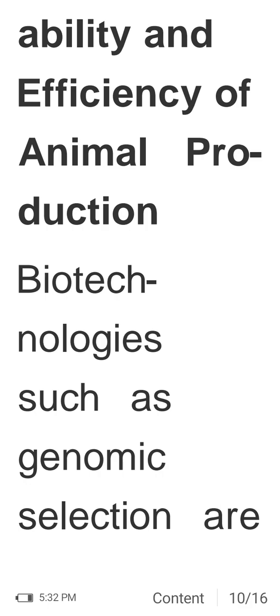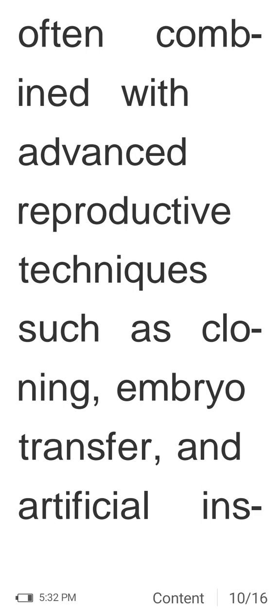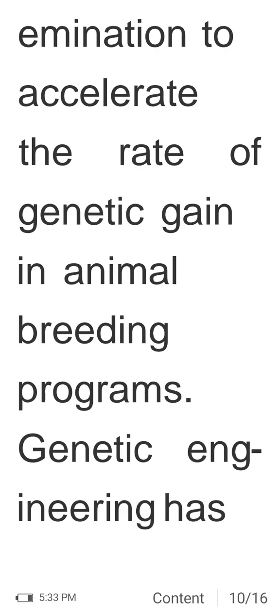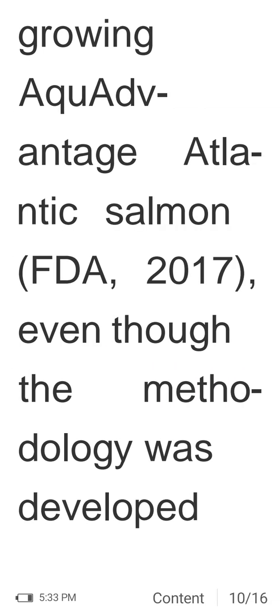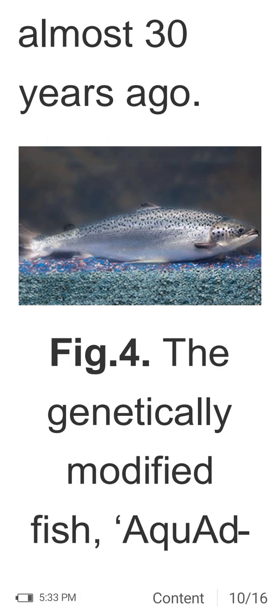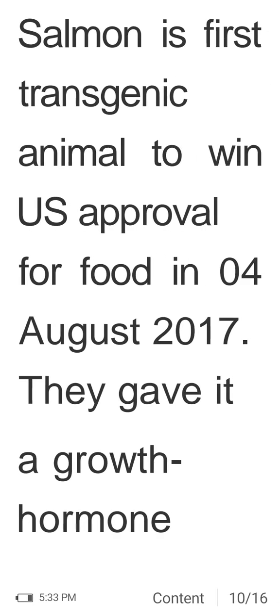Advancing biotechnology to improve sustainability and efficiency of animal production includes combining genomic and genetic selection with advanced reproductive technologies such as cloning, embryo transfer, and artificial insemination to accelerate genetic gain in animal breeding programs. Genetic engineering has resulted in only one approved application for an animal used for human consumption: the fast-growing AquaAdvantage Atlantic salmon, approved by the FDA in 2017, though the technology was developed almost 30 years ago.